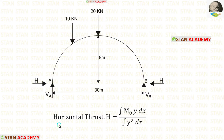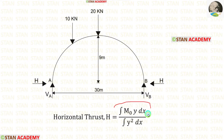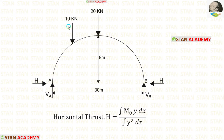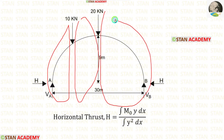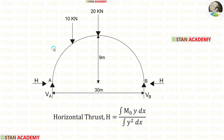We know the formula for the horizontal thrust: H equals the integration of m0·y dx upon the integration of y²·dx. To find the numerator, we have to make sections in the arch. There are three different parts: before the 10 kilo Newton point load, between the two point loads, and after the 20 kilo Newton point load. So we have to make three sections.